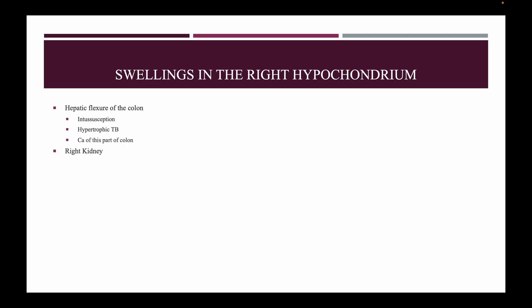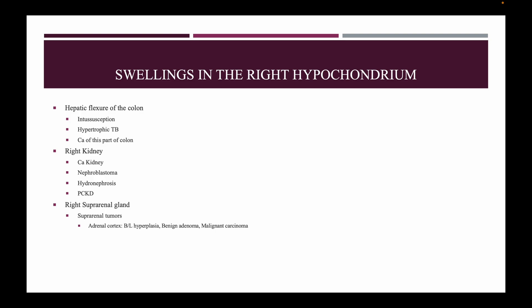Carcinoma of this part of the colon. In the right kidney: carcinoma of kidney, nephroblastoma, hydronephrosis, and polycystic kidney disease. In the right suprarenal gland: suprarenal tumors — in the adrenal cortex: bilateral hyperplasia, benign adenoma, malignant carcinoma; in the medulla: pheochromocytoma, benign ganglioneuroma, and malignant neuroblastoma.